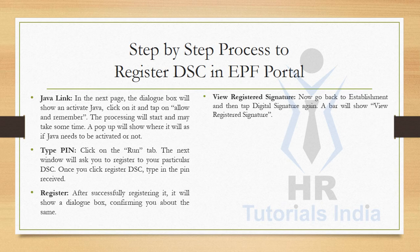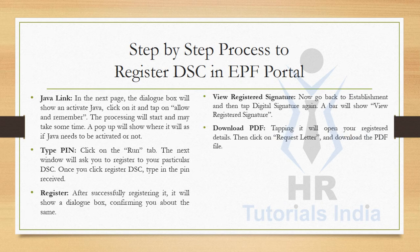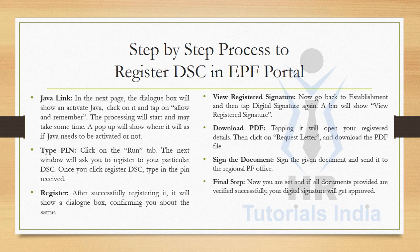After successful registration, a dialog box will confirm the same. Go back to the Establishment tab, tap Digital Signature again, and a bar showing View Registered Signature will appear. Tapping it will open your registered details. Click on Request Letter and download the PDF file.